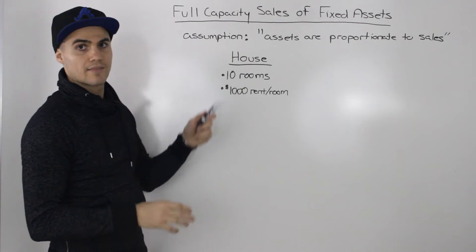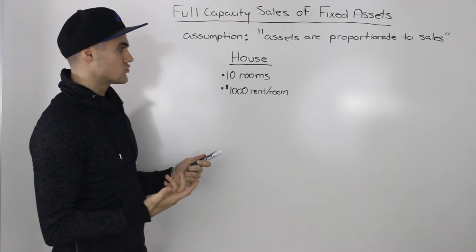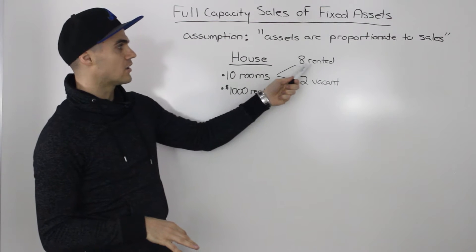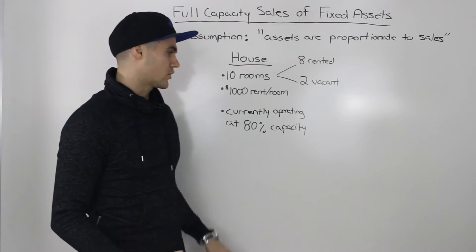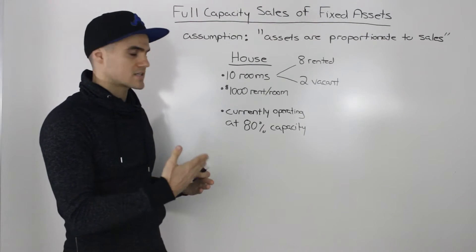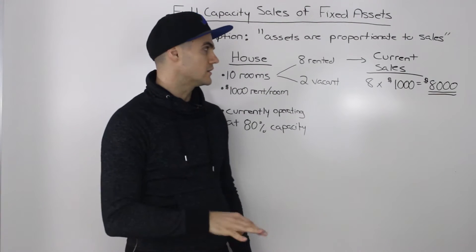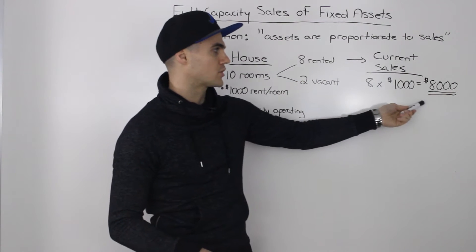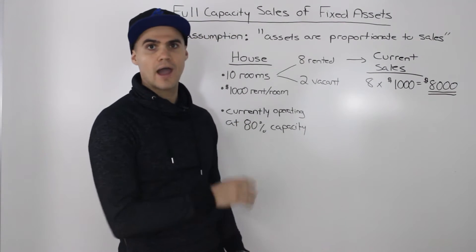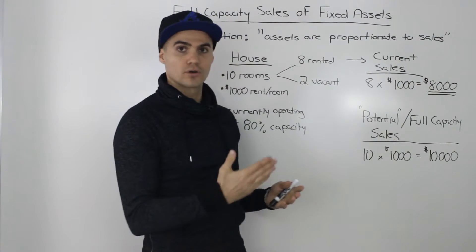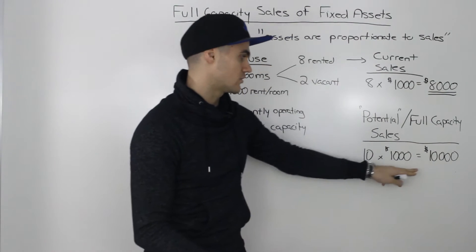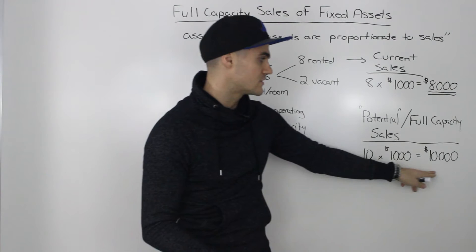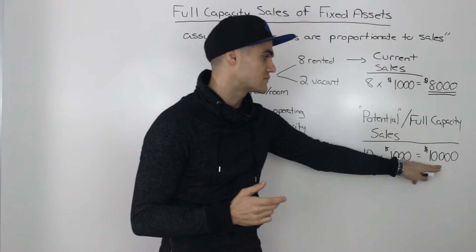Let's say that you own a house and that's your only asset. The house has ten rooms and each room is rented out for a thousand dollars. Now let's say in the present moment, out of the ten rooms, eight are rented out and two are vacant. So currently your house is only operating at 80% of its capacity — eight divided by ten. Currently your sales or revenue is eight rooms times one thousand dollars of rent per room, so your current sales are eight thousand dollars. However, your potential full capacity sales can be ten thousand dollars — ten rooms times one thousand dollars rent per room.